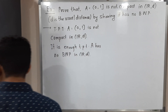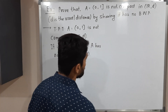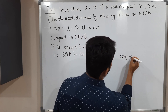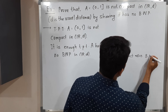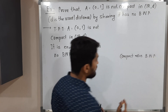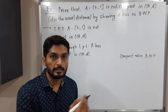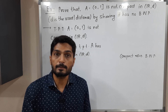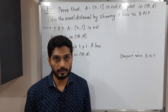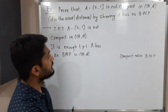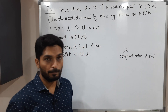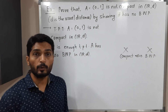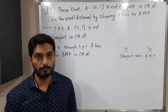There is one important result: a set is compact if and only if it has BWP. That means if you have any compact set, then it has BWP; or if you have any set which has BWP, then it is compact. Here we have to prove the set is not compact, so it is enough to prove it has no BWP.